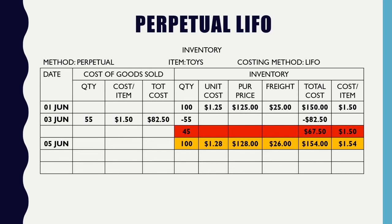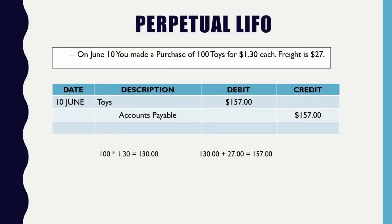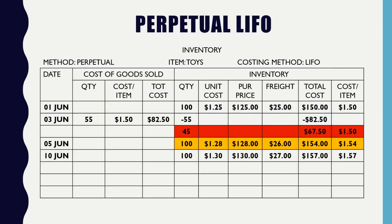Lastly, we have another purchase of 100 toys at $1.30 with a freight of $27. Plug it in and color code it. Now I have three batches of inventory to sell — my first red batch purchased on June 1st, my second on June 5th, and my third on June 10th.